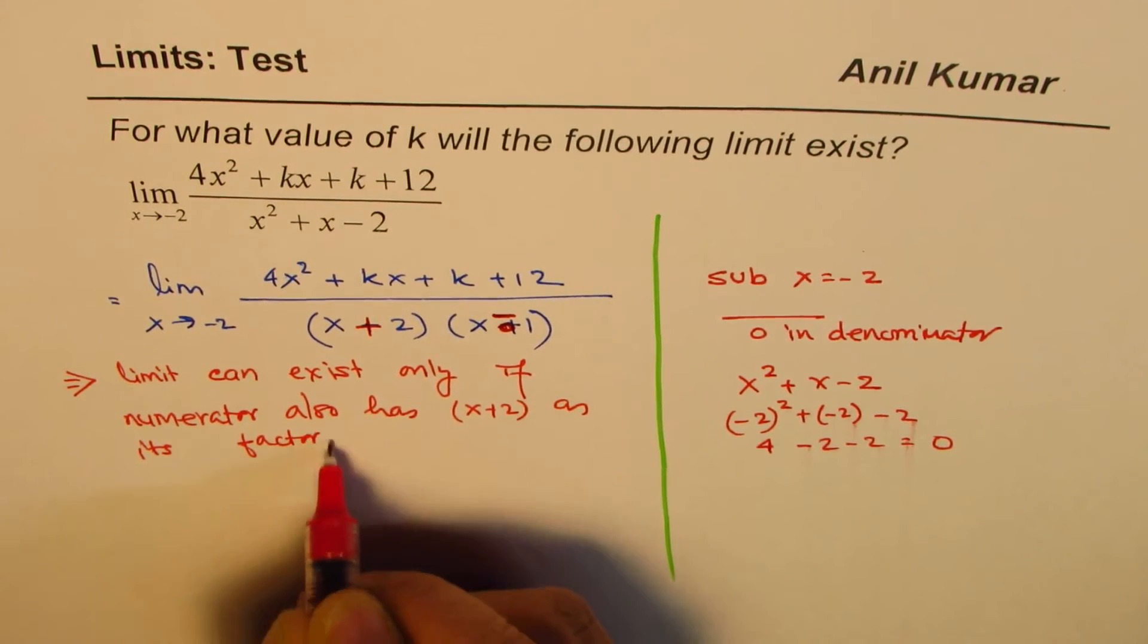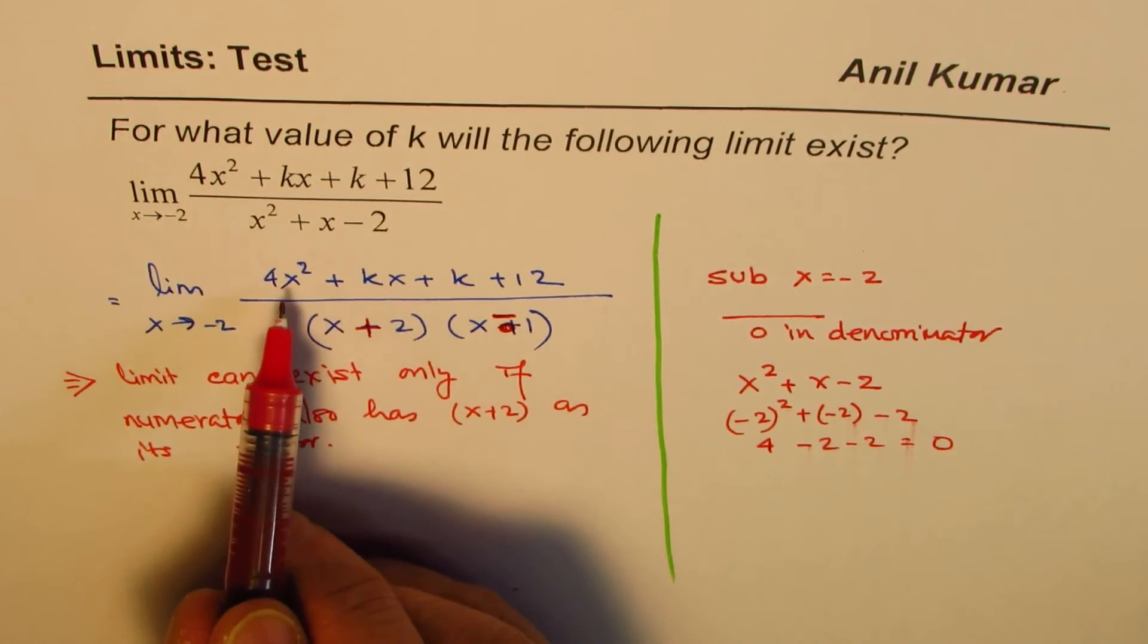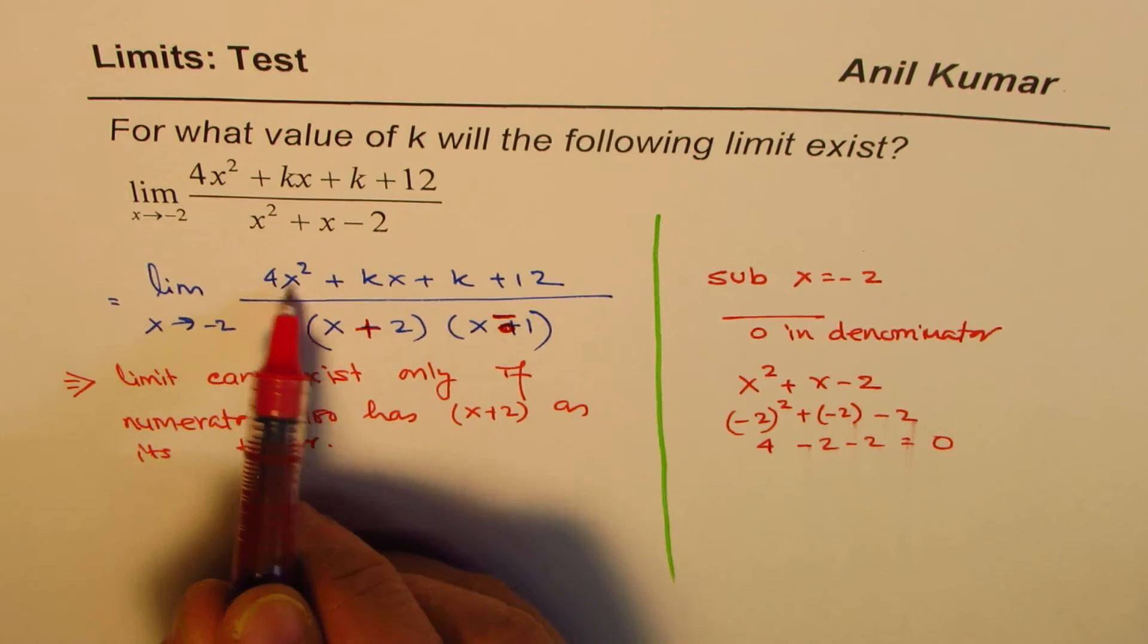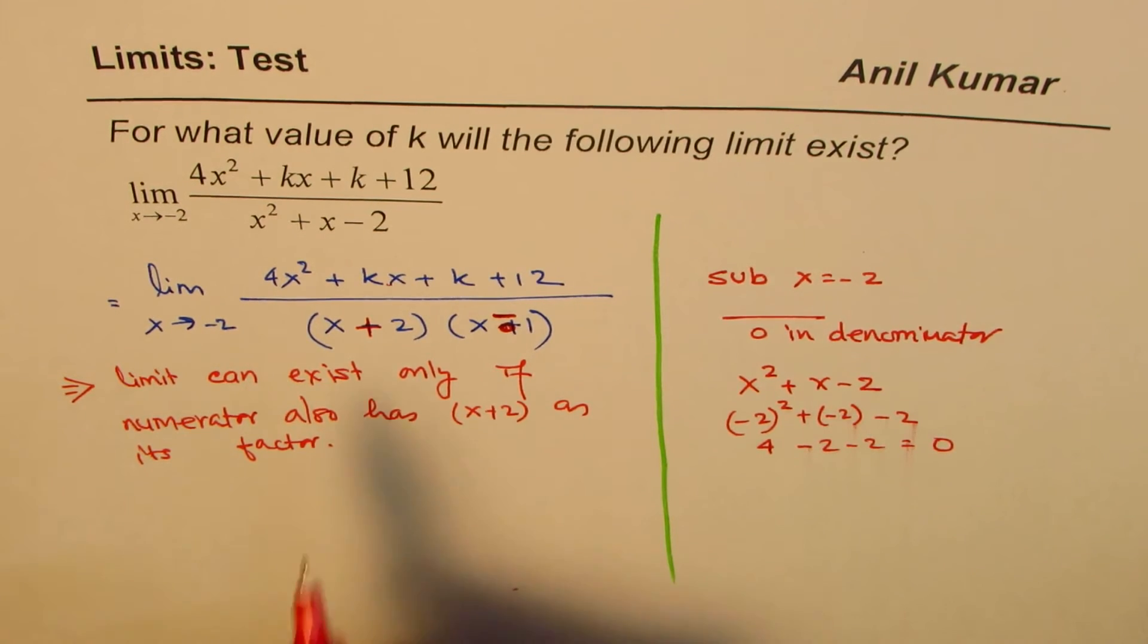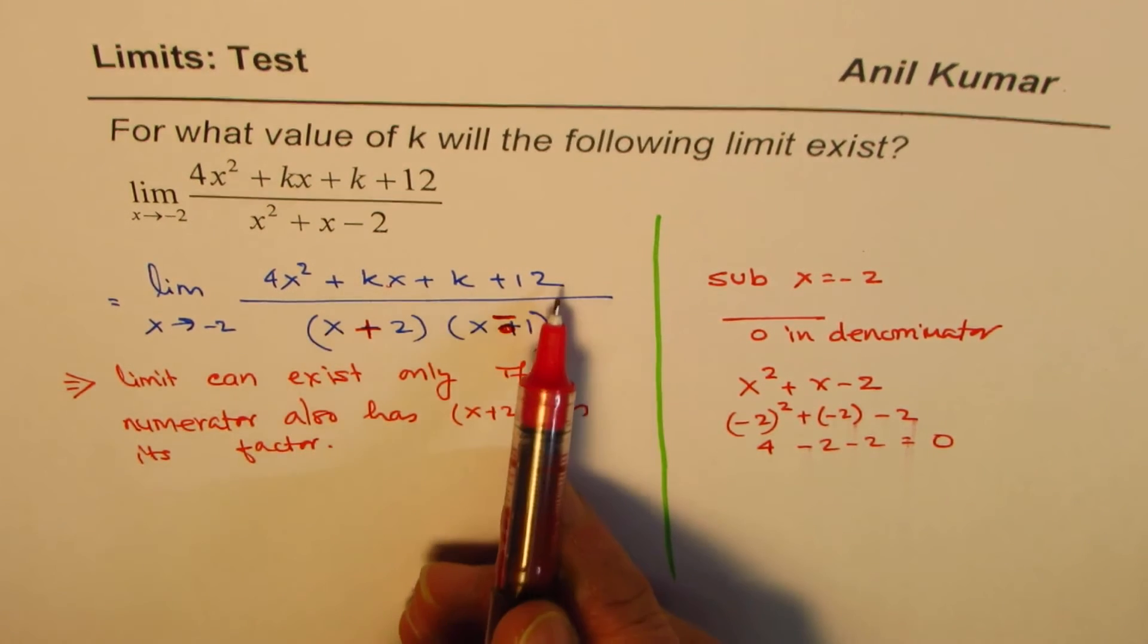This is very important. That is to say, if I substitute x equals minus 2 in my equation, it should be 0. If I substitute minus 2 in the numerator, it should be 0.